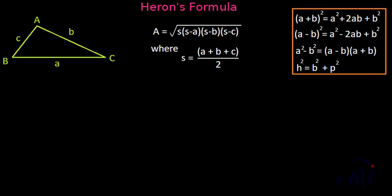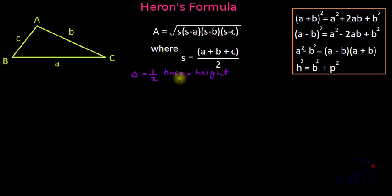In this video we are going to learn the derivation of Heron's formula. Heron's formula is used to find the area of a triangle when the length of the sides are given. Of course we know the formula for the area of a triangle is 1/2 × base × height, where base is one of the sides and height is the length of the perpendicular drawn from the vertex opposite to the base.